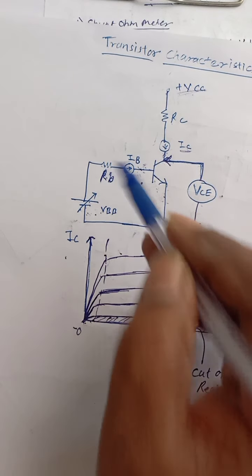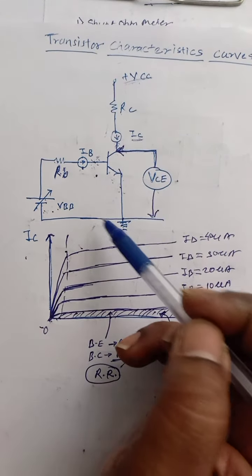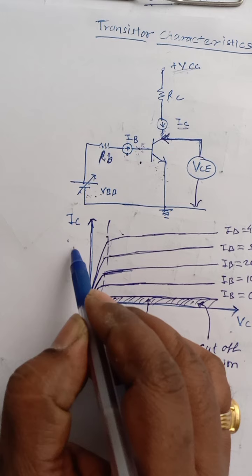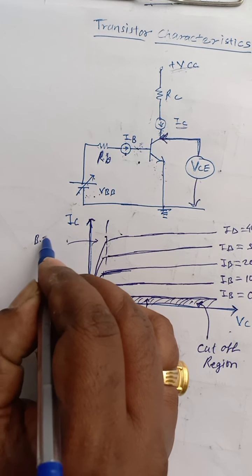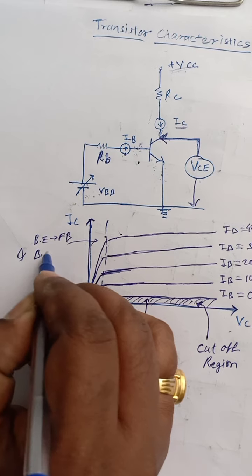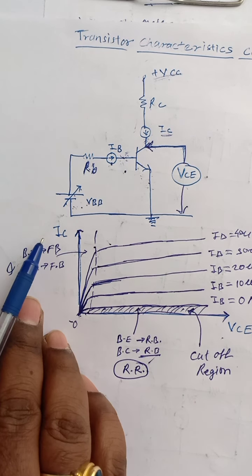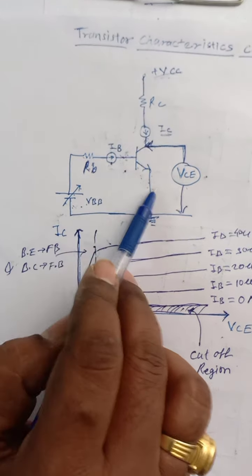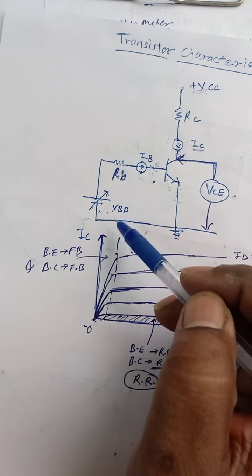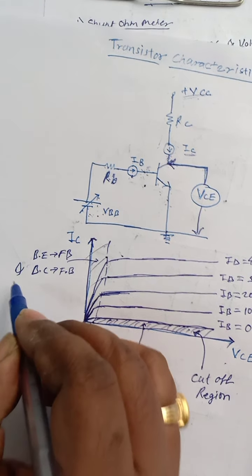At this portion, VCC is less than the base voltage, so this PN junction gets forward biased. In this region, base-to-emitter junction is forward biased and base-to-collector junction is also forward biased. Base-to-emitter junction is forward biased because some base voltage is applied, and base-to-collector junction is also forward biased because the collector voltage is less than VBB in this portion. This region is known as the saturation region.